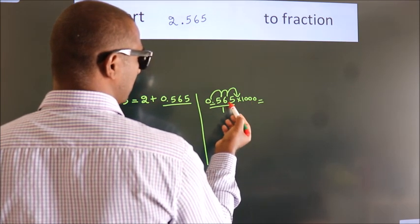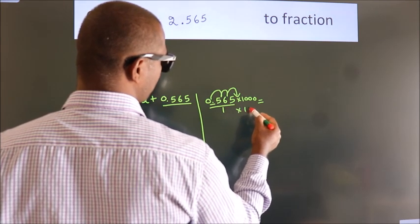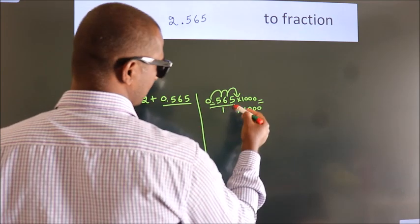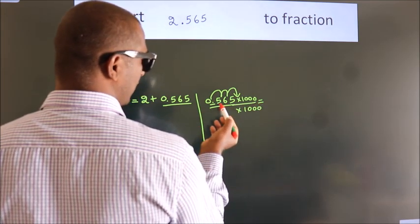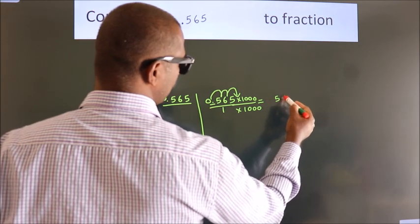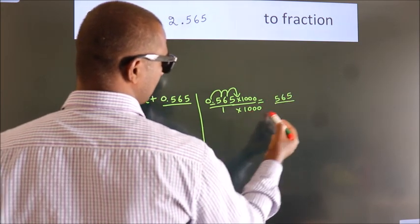Whatever number you are multiplying in the numerator, in the denominator also do the same. Next, 0.565 times 1000, 565. 1 times 1000, 1000.